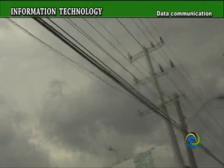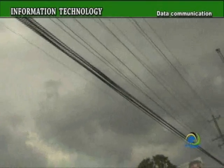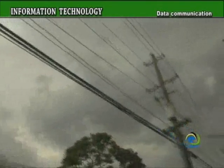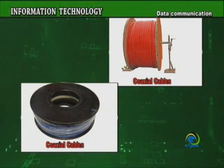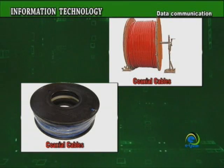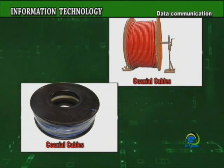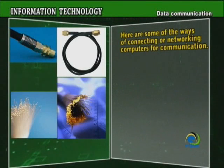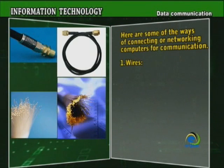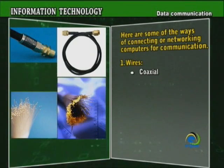The cost of Internet packages are determined by the bandwidth. The cable or wire selected for networking by the Internet provider determines both the bandwidth and the broadband channel available to the user. In other words, the type of cable selected affects the amount and speed of the data to be sent. Here are some of the ways of connecting or networking computers for communication: 1. Wires.